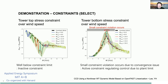Regarding constraints: the tower top stress constraint over wind speed is well below the constraint limit — it is inactive. The fluctuation is due to the tower vibrating back and forth. For tower bottom stress, there is a small constraint violation near rated wind speed due to a convergence issue; with better convergence, the violation would saturate to zero. This means tower bottom stress is an active constraint and is a limiting factor — constraining and regulating the control design.